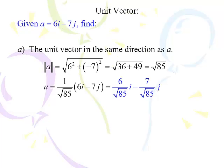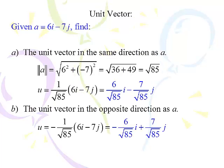To find a unit vector in the same direction, we multiply vector a by 1 over its magnitude — 1 over the square root of 85. The result is 6 over root 85 i minus 7 over root 85 j. That's a unit vector in the same direction as the original vector. If you square the x and square the y and add them up, you get 1. To find the unit vector in the opposite direction, simply multiply through by negative 1, giving negative 6 over root 85 i plus 7 over root 85 j. That has a magnitude of 1 as well — square the x, square the y, add them up, and prove it to yourself.